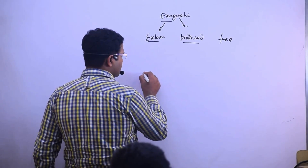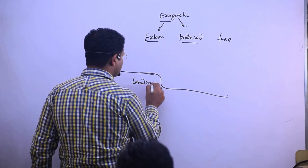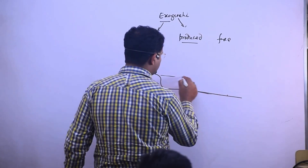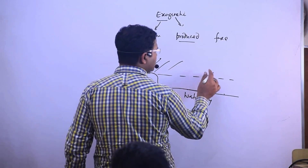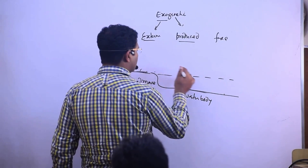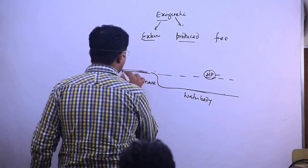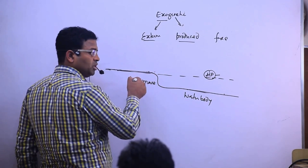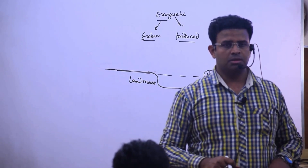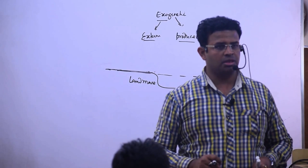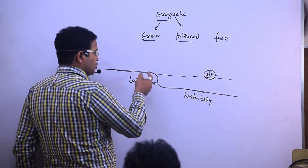Suppose this is a land mass and here we have a water body. The sun is giving heat — water takes time to get heated so it will be a little colder, meaning it is high pressure. The land will be comparatively low pressure because it is highly heated. This is related to the concept of land breeze and sea breeze in the study of climate.